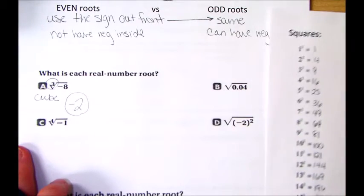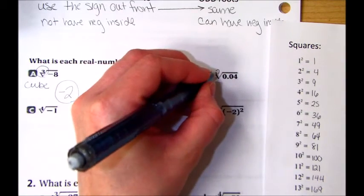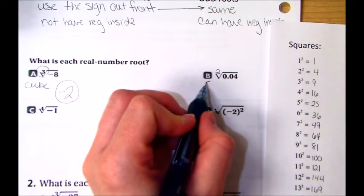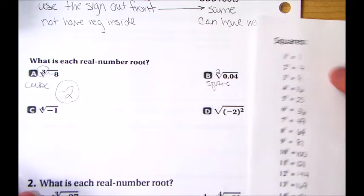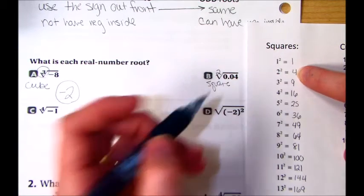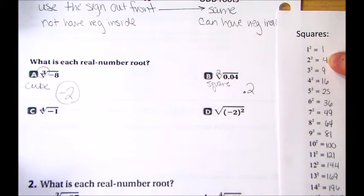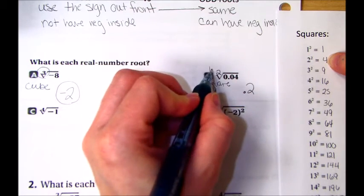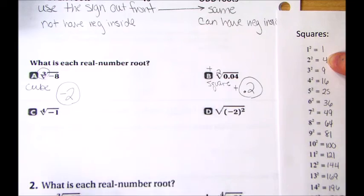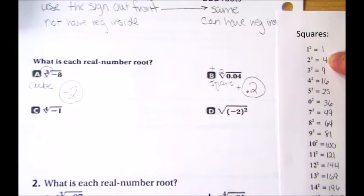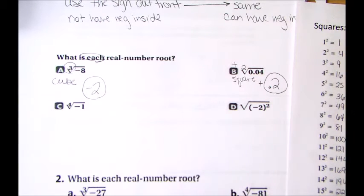Part B. The cube root of point, or excuse me, the square root of, okay, so this is an even number. This is a square root. The square root of point oh four. Well, the square root of four is two. Because it was point oh four, it's positive two. The outside was a positive, so my answer is only a positive point two. Not plus and minus. The directions just say find the singular one that they're listing.